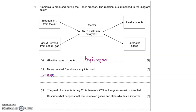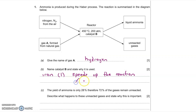Part B asks you to name catalyst B and state why it is used. The catalyst in this process is iron — one mark if you said this. A catalyst is used to speed up the reaction, so if you said 'speed up the reaction' or 'increases the reaction rate', you get the second mark.